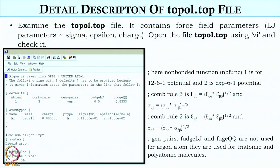This is a topology file, and as I have said earlier, it contains all the force field parameters — the Lennard-Jones parameters which are sigma and epsilon, charge, mass of the molecule, and how many molecules are being simulated. All these parameters are to be included in the topology file. This is a topology file for liquid argon. The first three lines include the NB function, which stands for non-bonded function. If it is 1, we are using a Lennard-Jones potential, that is a 12-6-1 potential, and if it is 2, then it is an exponential 6-1 potential.